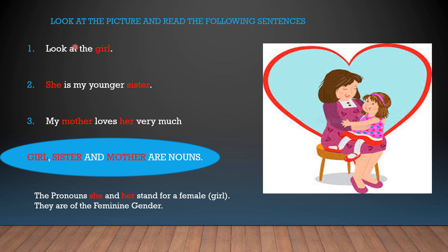Let's see this picture and read the sentences: 'Look at the girl. She is my younger sister. My mother loves her very much.' Girl, sister and mother are nouns. Pronouns such as she and her stand for female. So girl, sister, mother, she and her all belong to feminine gender.